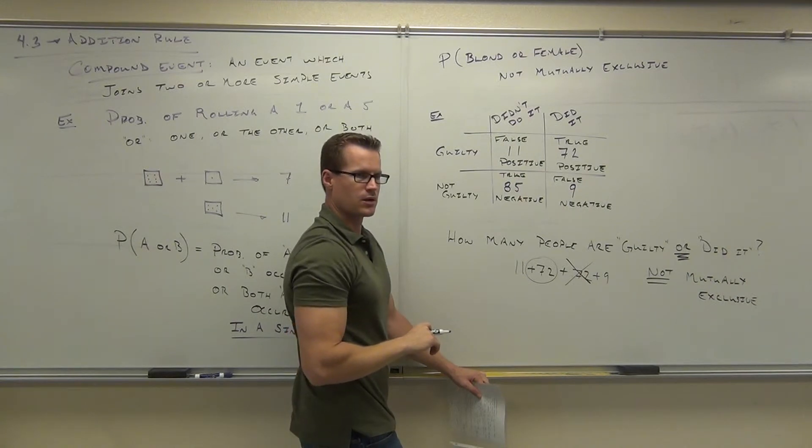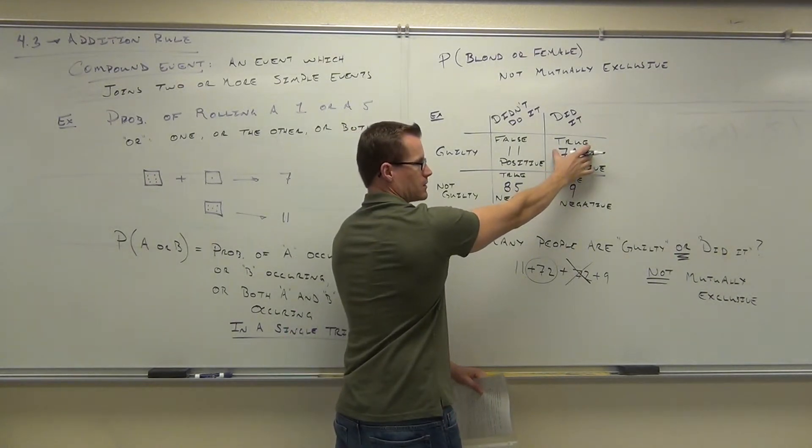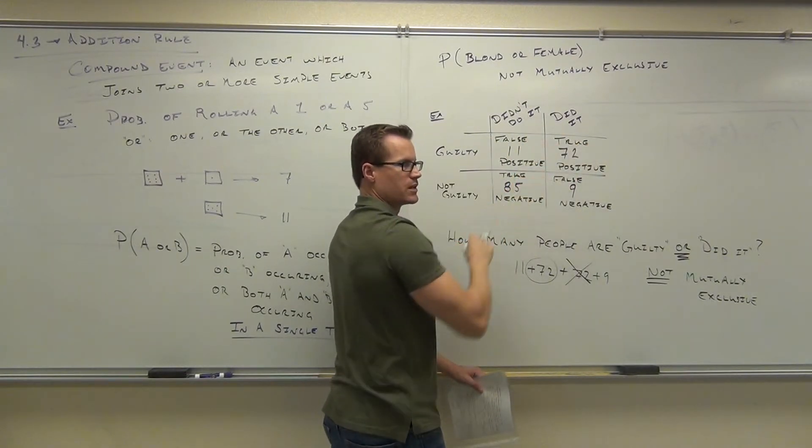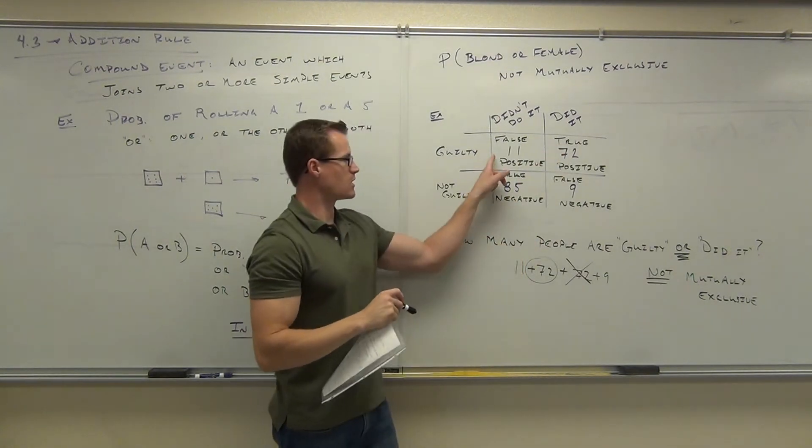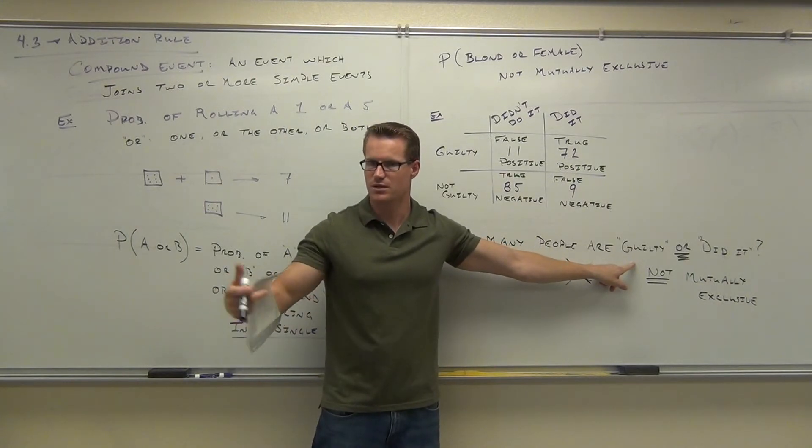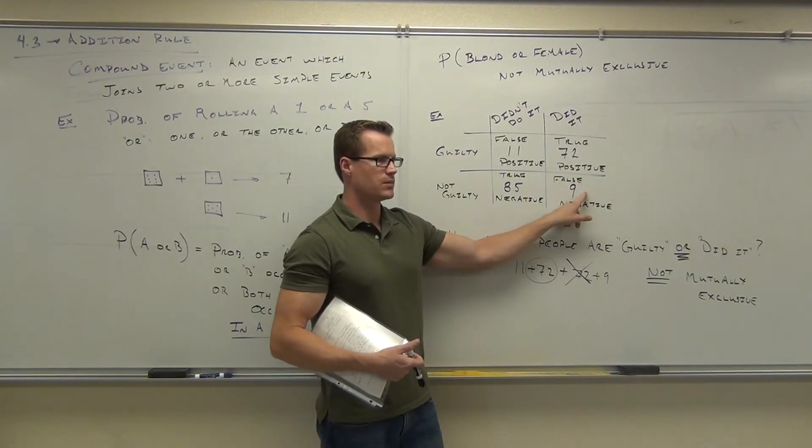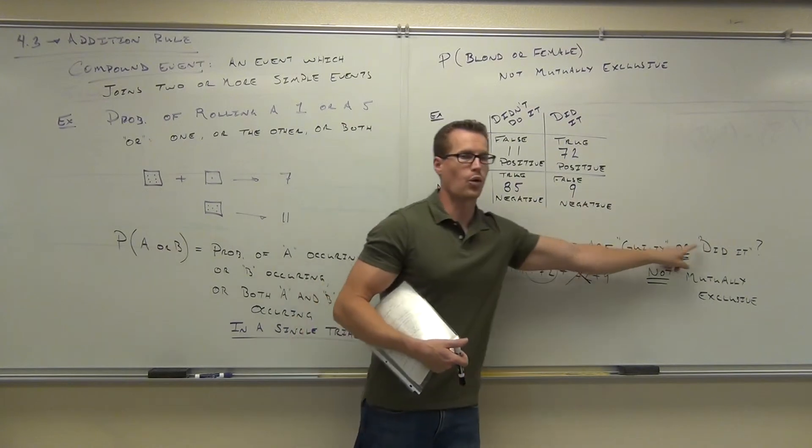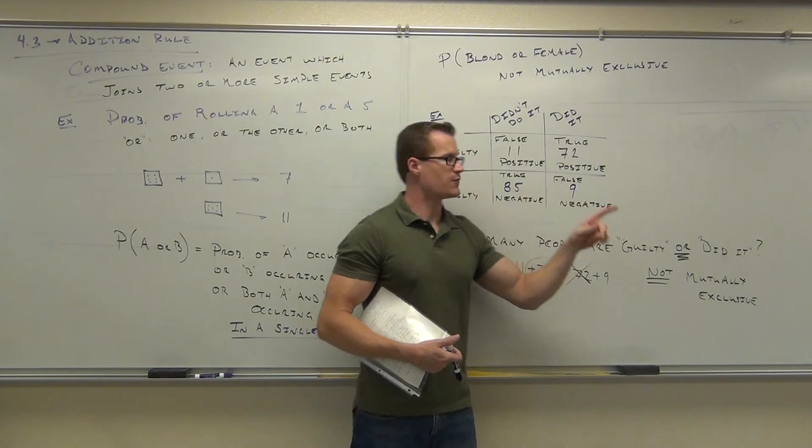So how many people are guilty or did it? We don't have to add all four of these up because we've already counted this guy once. We don't need that one. So how many people are either guilty or did it or both? Guilty or did it or both. 72 are guilty and did it. What I'm asking for is you're either guilty or you did it or both. So if you're guilty, if you're in this column, you're automatically guilty. That counts. That's successfully completing our event of guilty or did it. If you're here, you did it. You don't have to be both guilty and did it to be in this guilty or did it. Remember, or means either, or, or both.